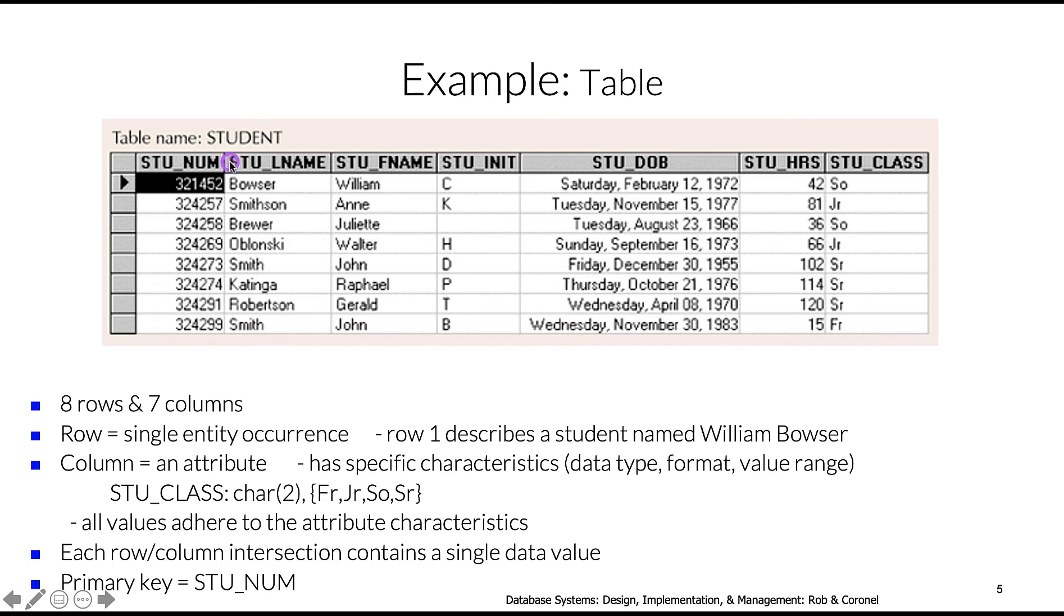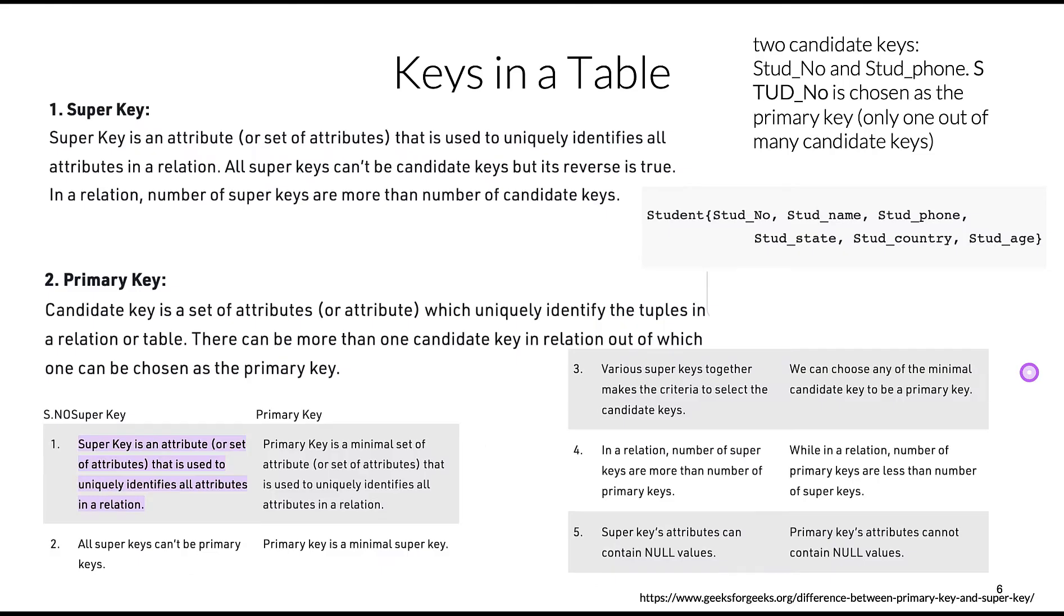Here we have a primary key, student_num, and there is no space in our column names - we use underscore. You can probably just by looking at student_class guess the size of the CHAR used - it's only two. You would specify CHAR of length two in your data design.